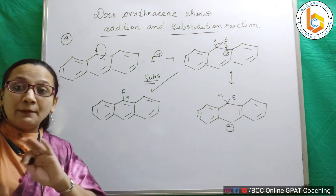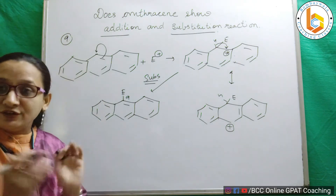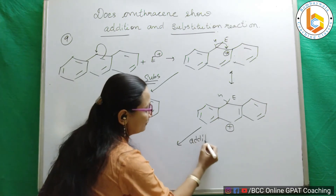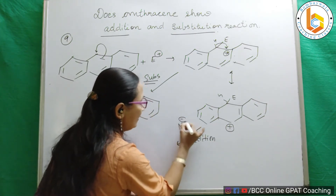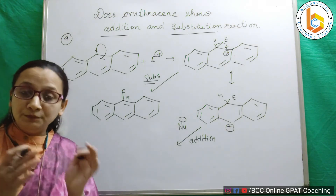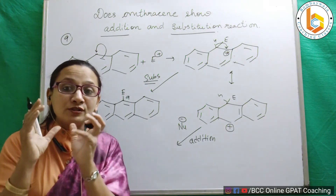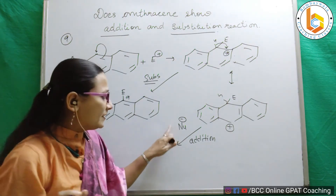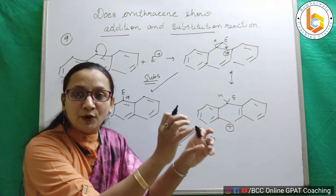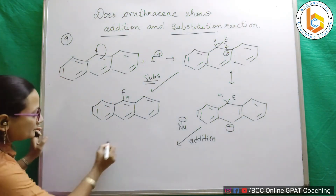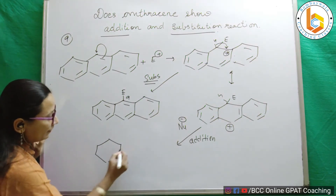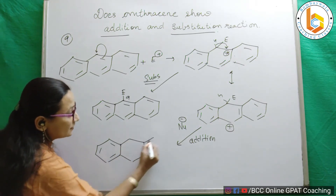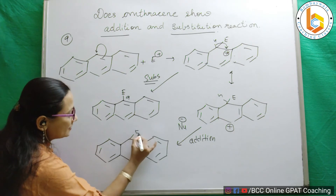Now let us see what will happen if anthracene has to show addition reaction. That reaction will progress from this resonating form. Say for example, there is a nucleophile in the system. A nucleophile is that which loves the positive charge — it itself bears a negative charge, but it has a tendency to go and attach towards the positively charged entity. Now see what can happen. This is my benzene ring, this is as it is, this is C, and E as it is, H as it is.